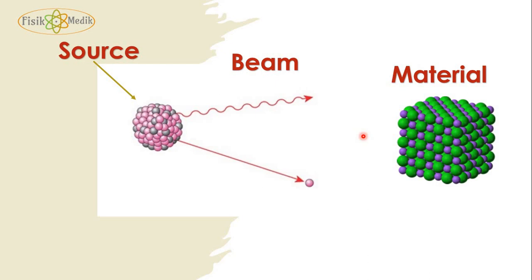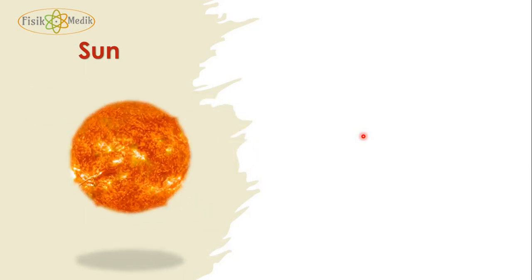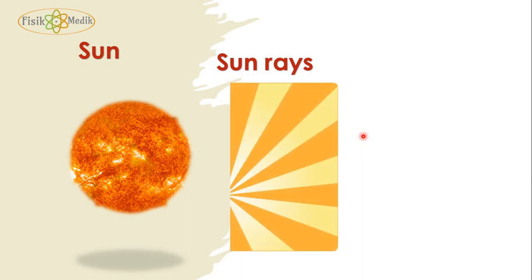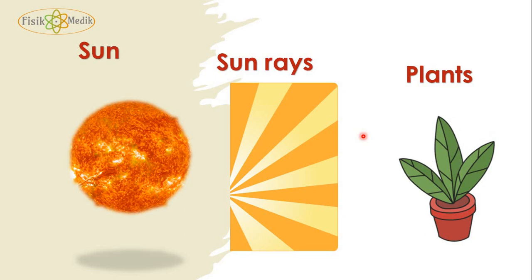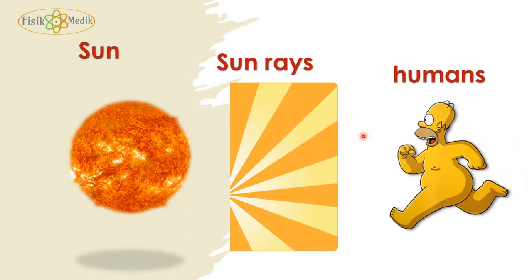A very common example of radiation is the radiation of the Sun — the Sun rays. The source is the Sun, the Sun rays are the beam, and the material could be a plant, as shown here, or a human.